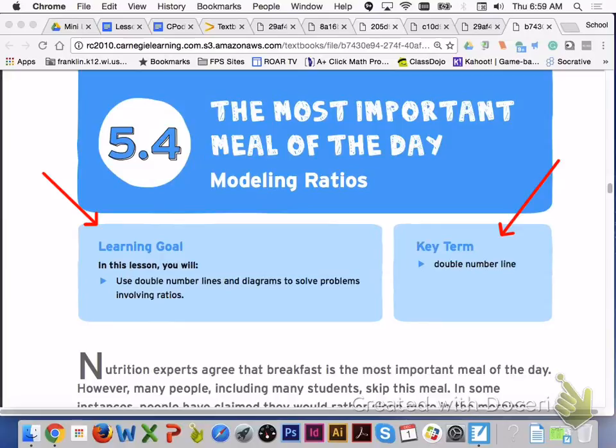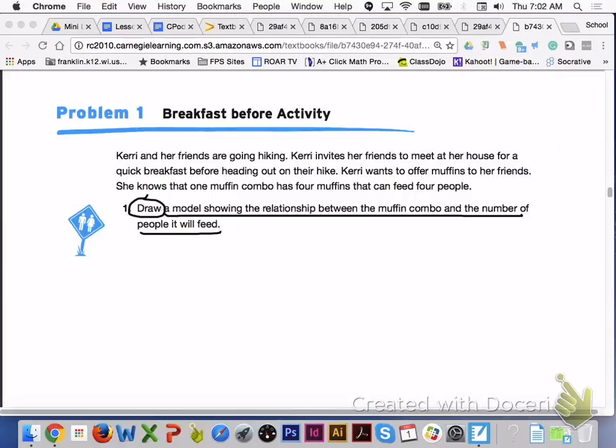Key term to look for in lesson 5.4, double number line. Turn to page 334, problem 1, breakfast before activity.